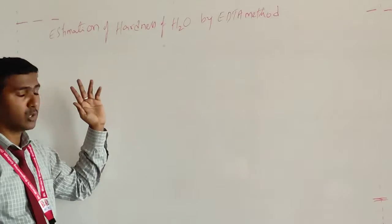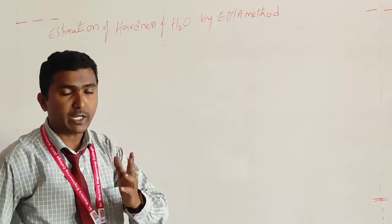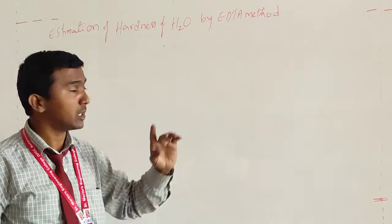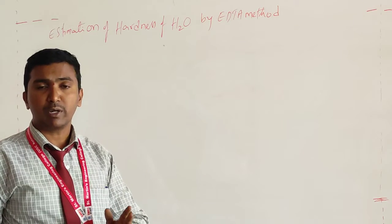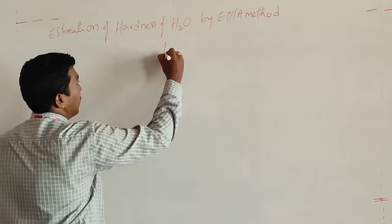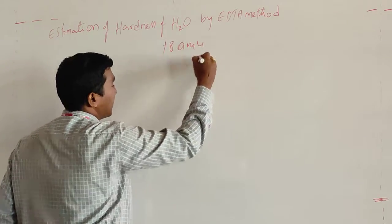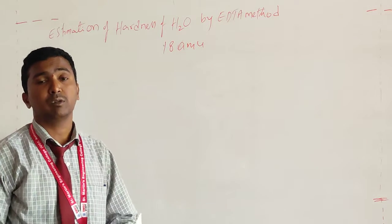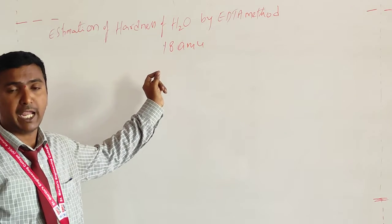First of all, we have to know what is meant by hardness. First, we have to know about water. Water is H₂O, and the water molecular weight is 18 atomic mass units (AMU).